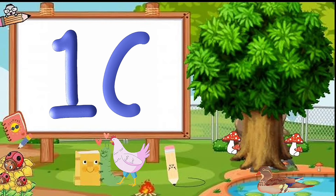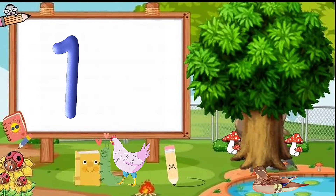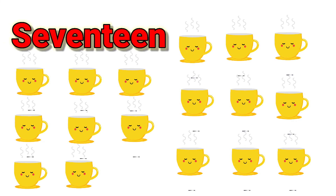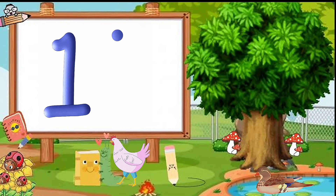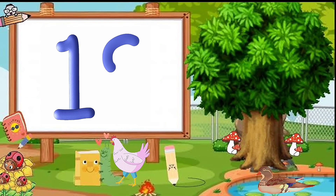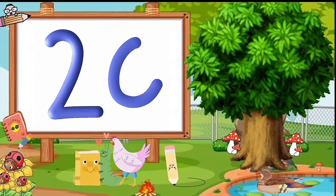15 — F-I-F-T-E-E-N — 15 Balls. 16 — S-I-X-T-E-E-N — 16 bananas. 17 — S-E-V-E-N-T-E-E-N — 17 Cups. 18 — E-I-G-H-T-E-E-N — 18 Kitties. 19 — N-I-N-E-T-E-E-N — 19 Spoons. 20 — T-W-E-N-T-Y — 20 circles.